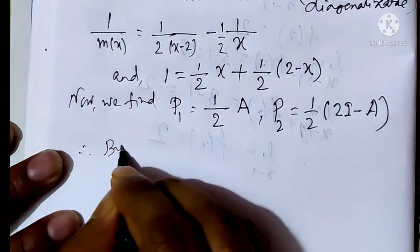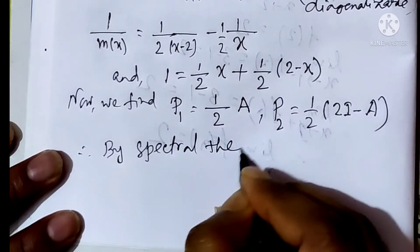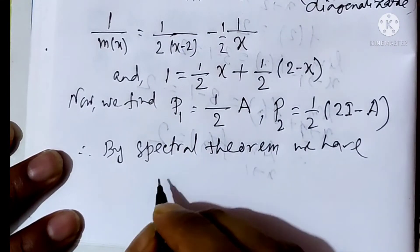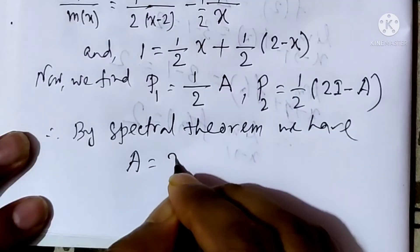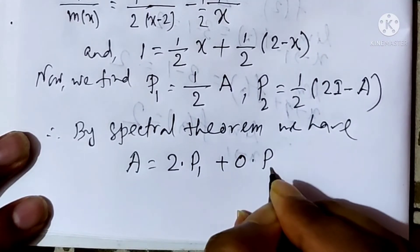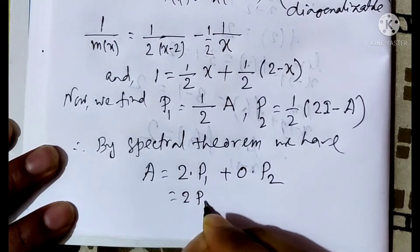Therefore, by spectral theorem, we have A equals 2 times P1 plus 0 times P2. That is 2 times P1.